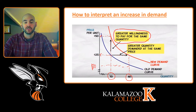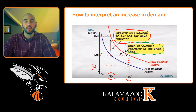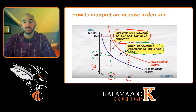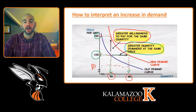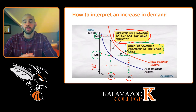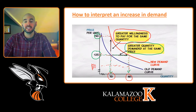The other way to interpret an increase in demand is as a greater quantity demanded at the same price. Originally, when the market price is $25, the initial quantity demanded was 70 units. However, when there's an increase in demand, the quantity demanded at a price of $25 is now 80 units, and the same would hold at other prices such as $50. It's important to understand both interpretations: a greater willingness to pay for the same quantity, and a greater quantity demanded at the same price.